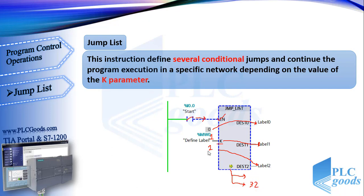Pay attention — if the K parameter is greater than 31, for example 40, the program doesn't jump, and the CPU executes the program from the next network.